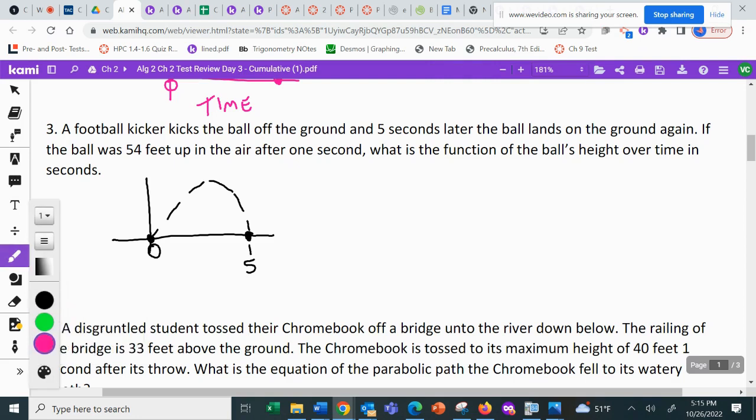So again, we're writing the equation. That's your goal. Writing the equation. Write the function it says. Time is usually the X because the time is going to determine the height of the football. At time zero, the height is zero. At time five, the height is zero.